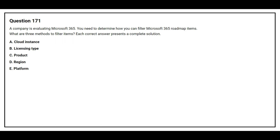Question 171. A company is evaluating Microsoft 365. You need to determine how you can filter Microsoft 365 roadmap items. What are three methods to filter items? Option A: Cloud Instance. Option B: Licensing Type. Option C: Product. Option D: Region. Option E: Platform.